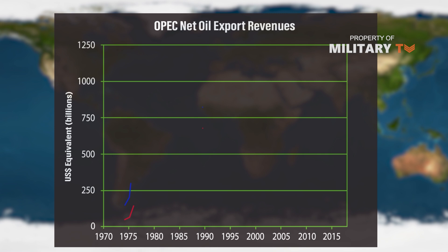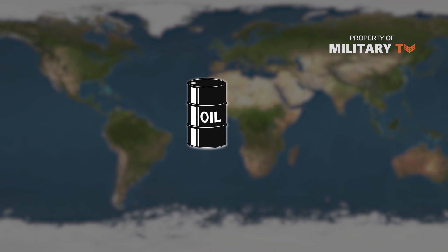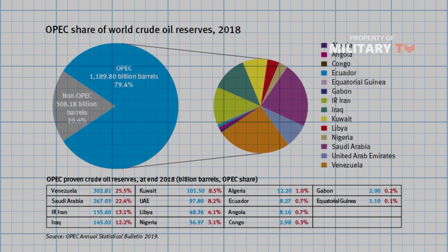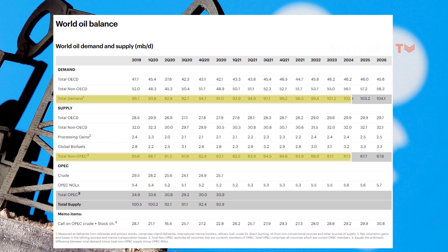OPEC does not decide how much oil costs but can influence prices by controlling oil production. They aim to set production to meet global demand, but if they increase or decrease oil production levels, they can affect the price of oil. Generally, when production goes down, prices go up. According to 2018 statistics, OPEC controls almost 80% of the world's supply of oil reserves, and the consortium can influence the price of oil and gas by increasing or decreasing production.